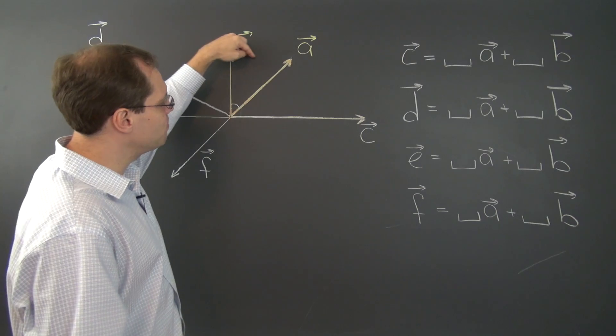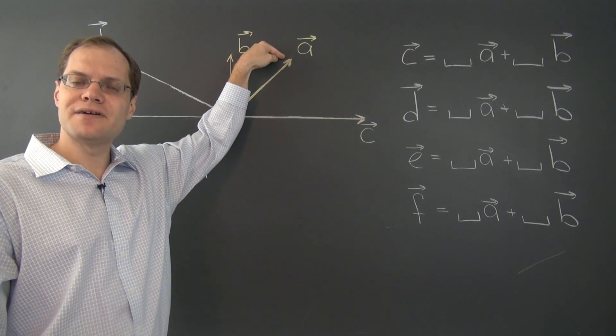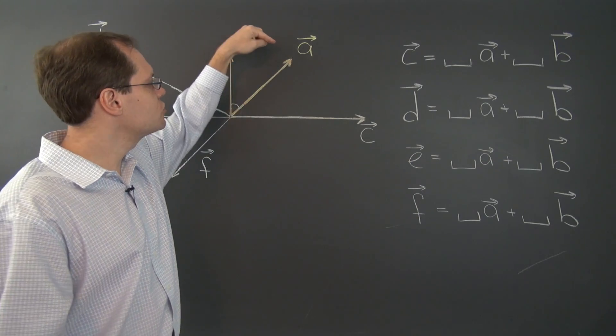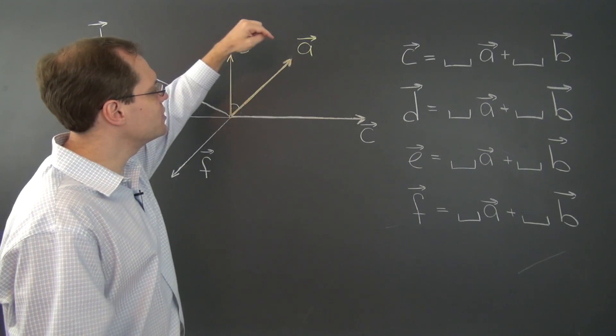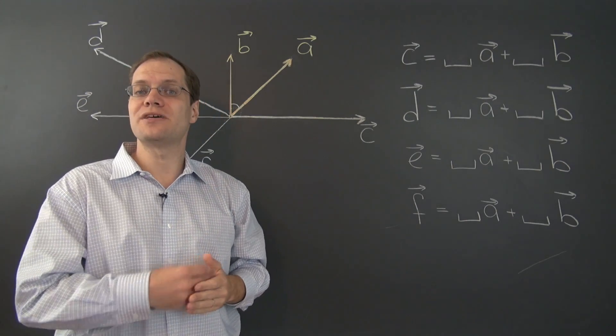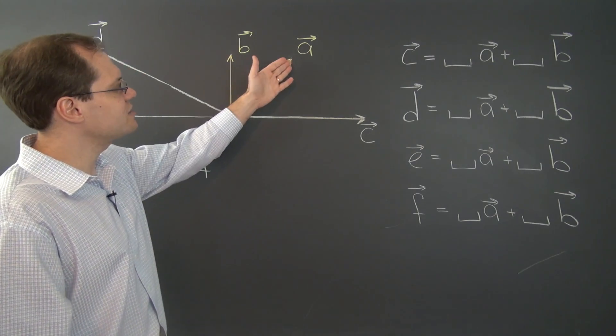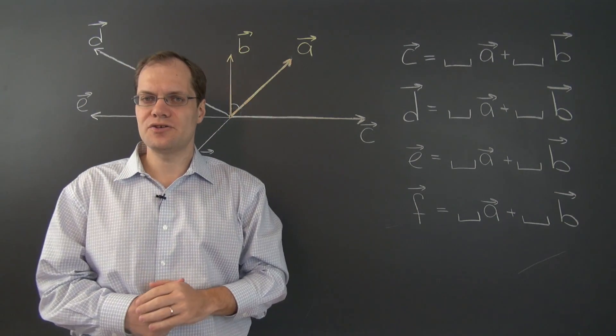Because it's a minus b that points in the right direction. So the key to getting to c is realizing that a minus b points in the right direction, but is too short. It's half the length of c. So a minus b doesn't cut it. We need to take twice that, twice a minus b.